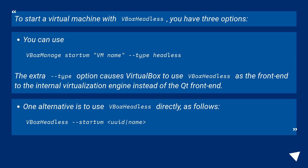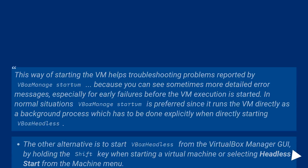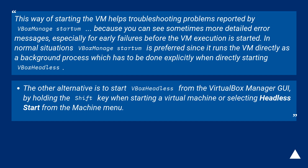One alternative is to use VBoxHeadless directly, as follows: VBoxHeadless --startvm <name>. This way of starting the VM helps with troubleshooting problems reported by VBoxManage startvm, because you can see sometimes more detailed error messages, especially for early failures before the VM execution is started.